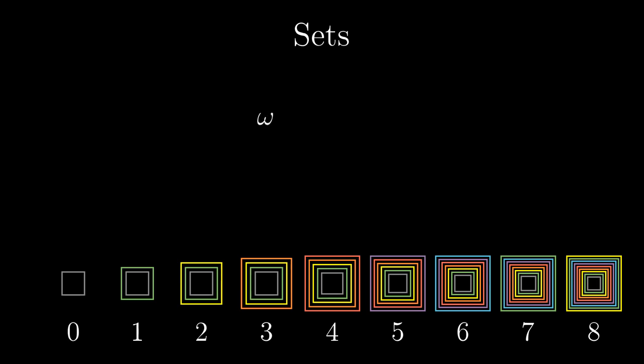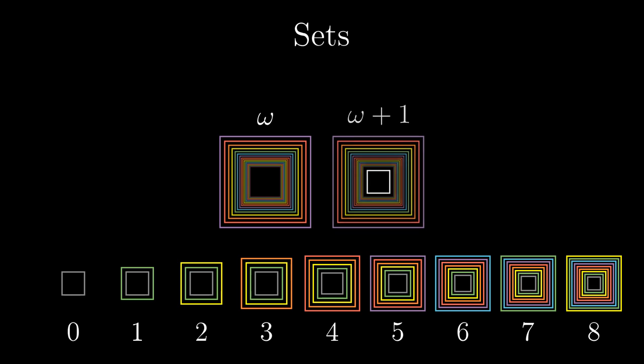How should we represent the ordinal omega this way, and what about omega plus 1? We can draw an infinite sequence of nested rectangles here, but first it contradicts the axiom of regularity, and second if we draw omega plus 1 this way, it doesn't have any formal meaning at all.